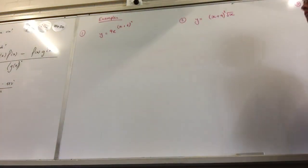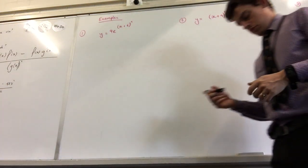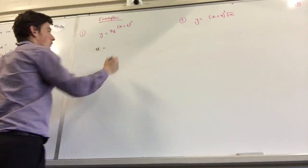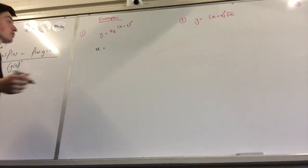So for the first one we're using the chain rule, so we've got u equals what? x plus 6.